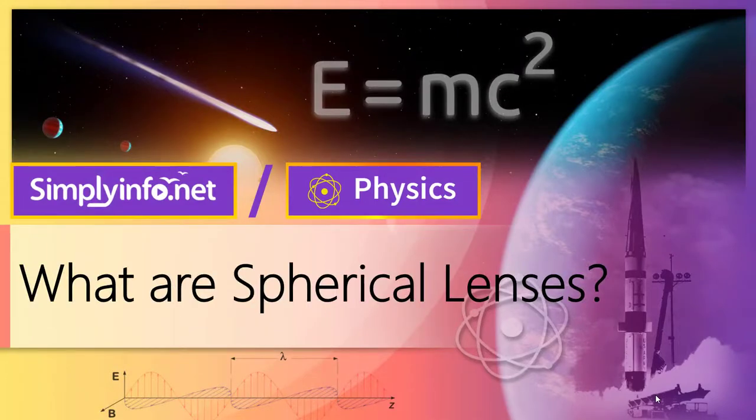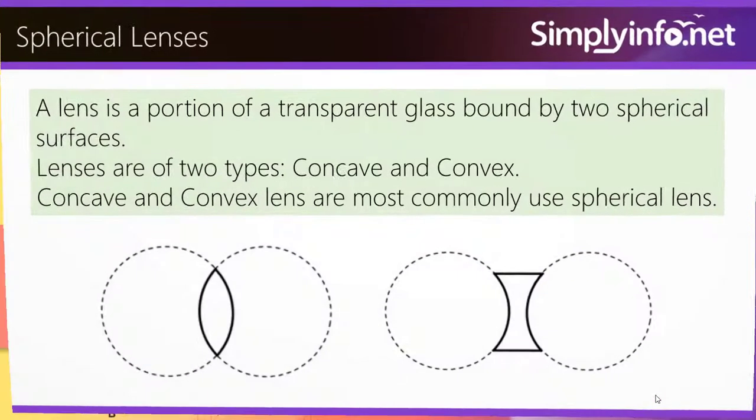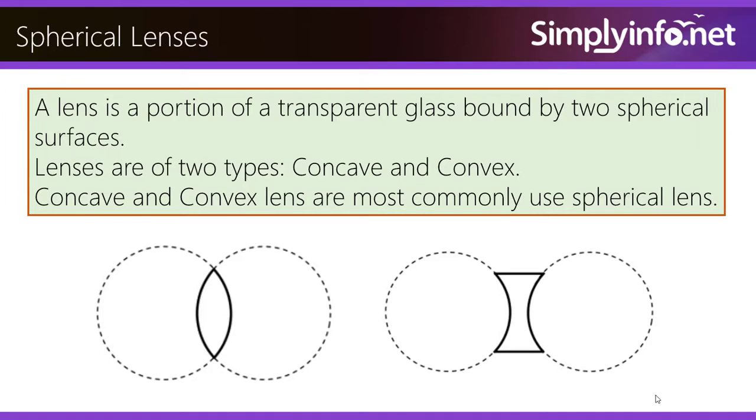What are Spherical Lenses? A lens is a portion of a transparent glass bound by two spherical surfaces. Lenses are of two types: concave and convex. Concave and convex lenses are most commonly used spherical lenses.